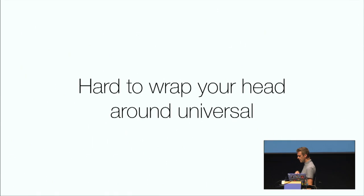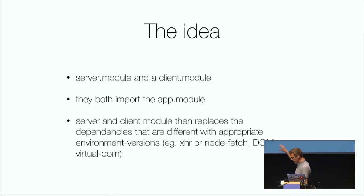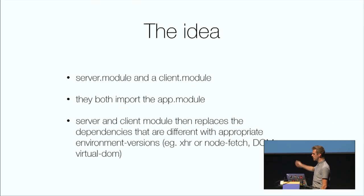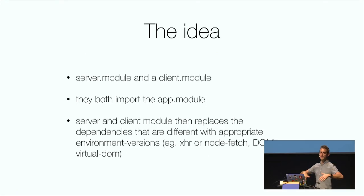I started looking into Angular Universal, before it came into the core. The concept is that you still build your regular app module, then wrap it in a server module on the server and a browser module on the client. All your application code stays the same. The server module then replaces some dependencies — because we can't do XHR in Node, and we don't have the window object or DOM stuff on the server — Angular's server module handles all those replacements for you, so it's pretty easy to use.